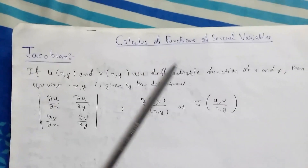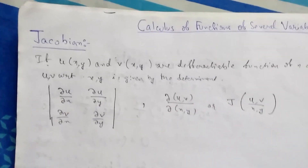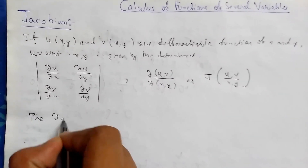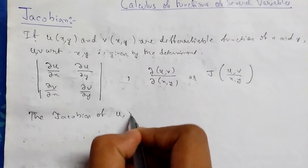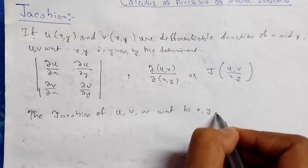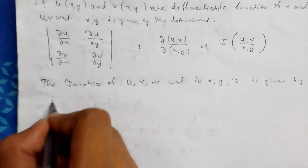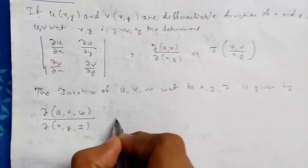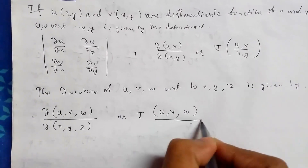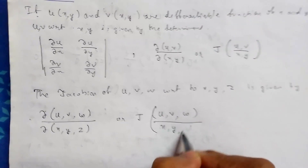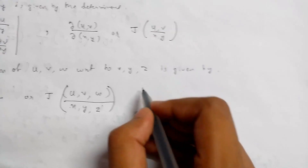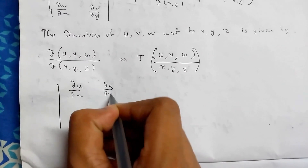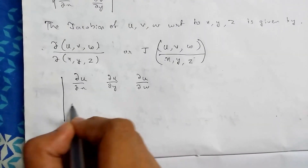It is also written as del(u,v) upon del(x,y), or J of u comma v upon x comma y. Now for three variables, the Jacobian of u, v, w with respect to x, y, and z is written as del(u,v,w) upon del(x,y,z), or J of u,v,w upon x,y,z. The determinant form will be a 3x3 matrix of partial derivatives: del u/del x, del u/del y, del u/del z, del v/del x, del v/del y, del v/del z, del w/del x, del w/del y, del w/del z.